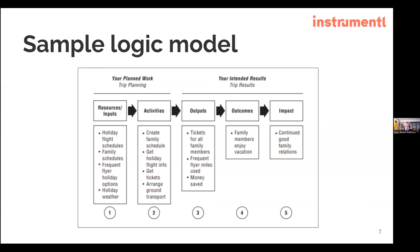We take those inputs and do something with them: create a flight schedule, get tickets, arrange ground transportation — so that we can have the outputs of money saved and family members having a great time. But family members having a good time on the vacation isn't the end of the story. That's where our grant-making partners are hoping we can lead them further — why do we do family vacations? It's not just about that one day on the beach. It's about creating family relationships that last a long time, building common bonds and connection.